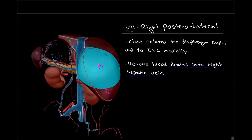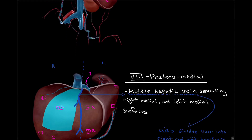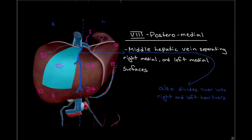Here we can see segment number seven. Both segment number seven and number six drain their blood into the right hepatic vein. And now highlighted, the last one — segment number eight. We can appreciate all of these segments being drawn on, and again, that very important middle hepatic vein, which is the border between the right and left hemiliver.